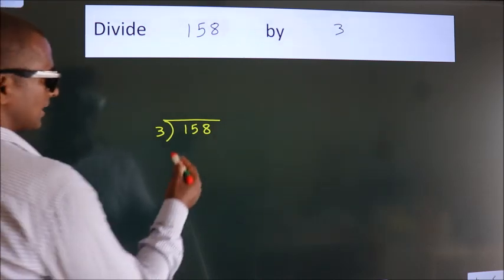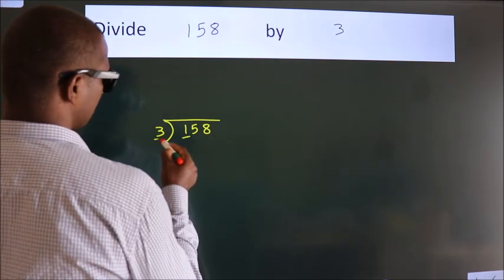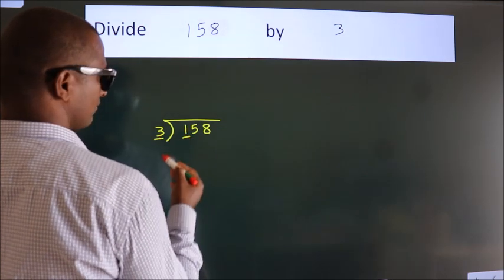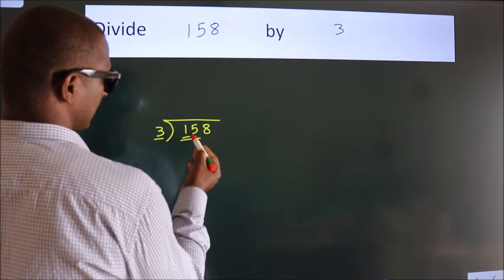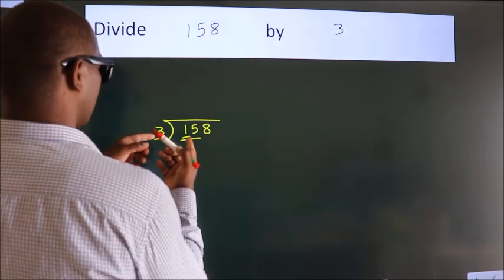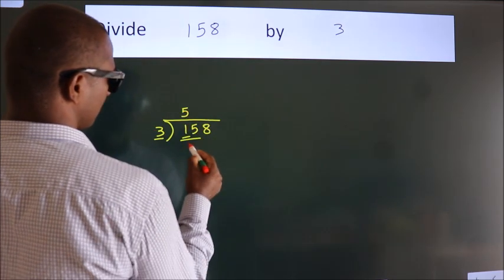Next. Here we have 1, here 3. 1 smaller than 3. So, we should take 2 numbers, 15. When do we get 15? In 3 table, 3 fives, 15.